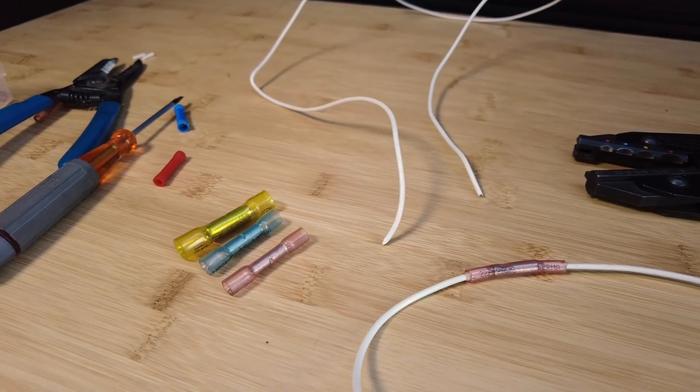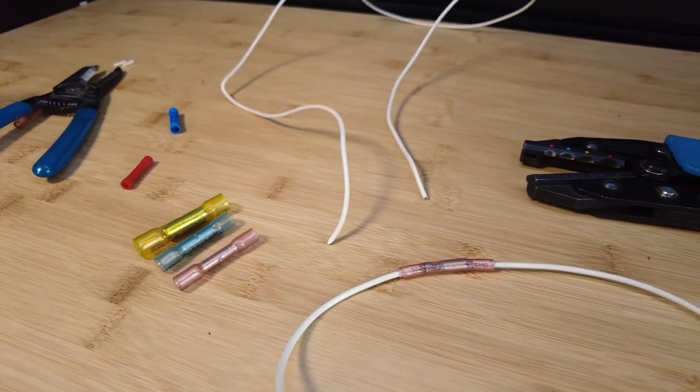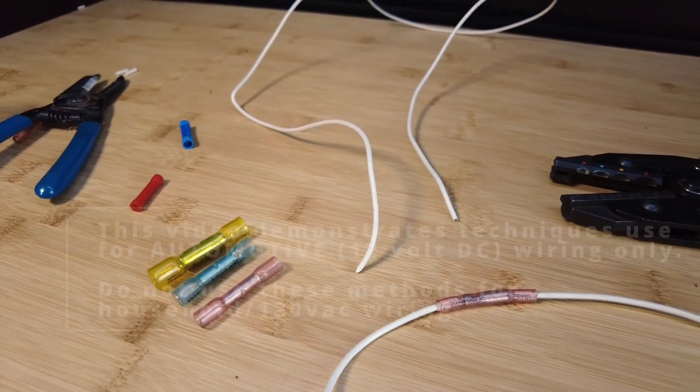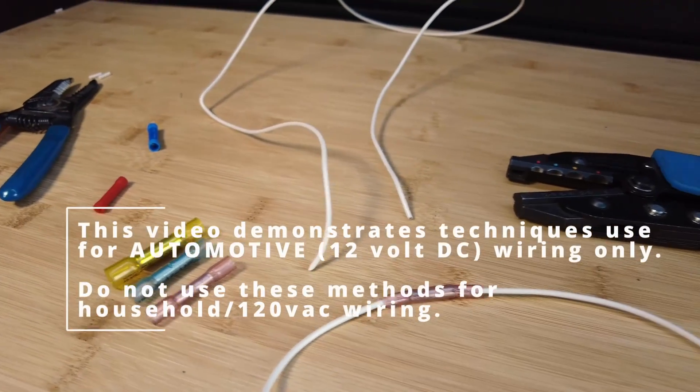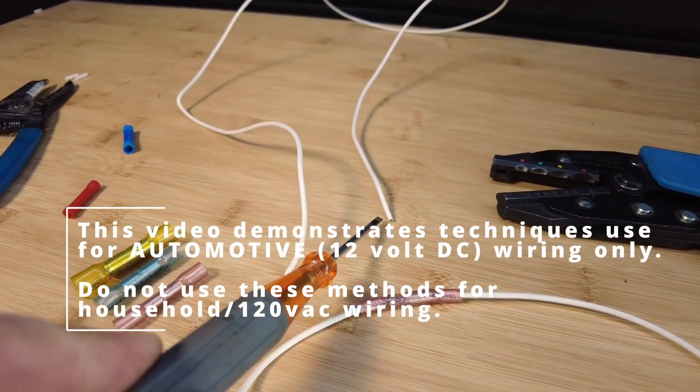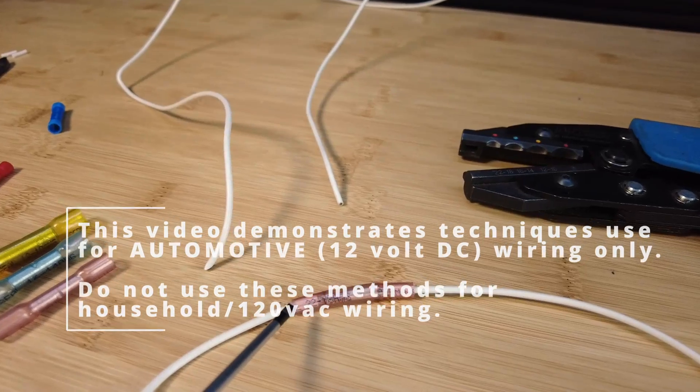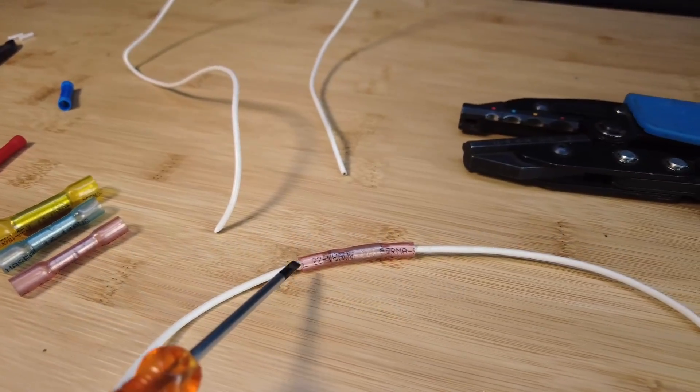Today we're going to go over how to crimp a wire. There are many different types of methods to join the ends of two wires together. In this case, we're going to make it look like this, which is called a butt connection.